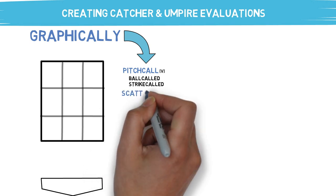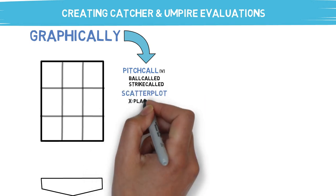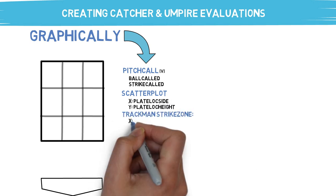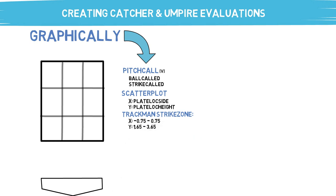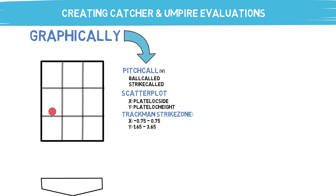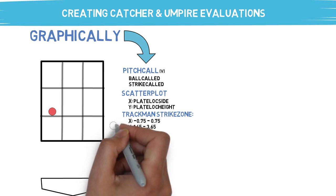Next, you can create a scatterplot utilizing the variables we talked about on the previous screen, remembering the TrackMan strike zone variables. You can then see how your catchers or umpires performed in one game, a series, or an entire season. I find it's best to choose two colors to represent called strikes and called balls.